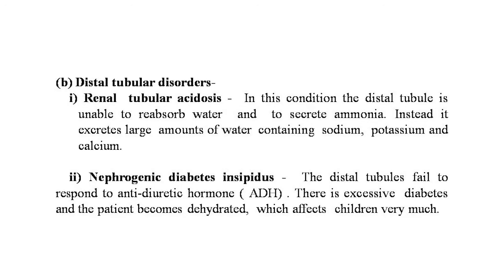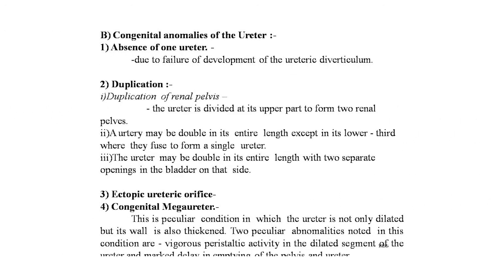The second part of the lecture is congenital anomalies of the ureter. First is absence of one ureter, which is also associated with absence of the kidney on that side. It is due to failure of development of the ureteric diverticulum.